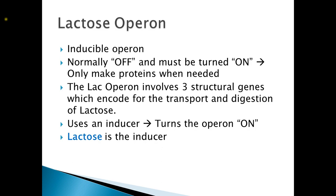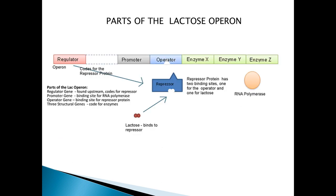Let's look at the parts of the lactose operon. Again, we have the regulator, found upstream from the other components of the operon. The regulator codes for the repressor protein. There is the promoter region, which is going to be the binding site for the RNA polymerase. The operator region, which is going to be the binding site for the repressor protein. And the structural genes — in the lactose operon, there are three structural genes, each coding for an enzyme needed for the digestion of lactose.